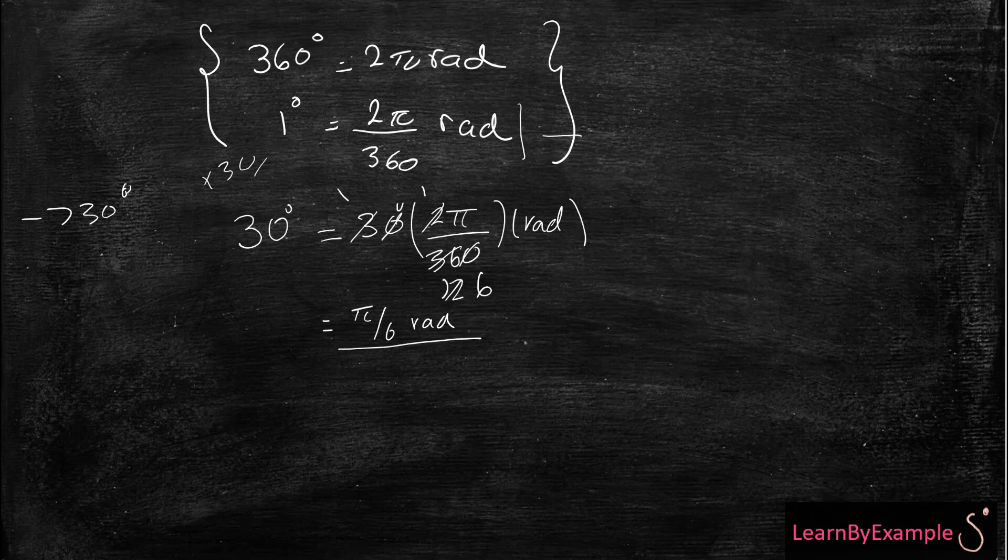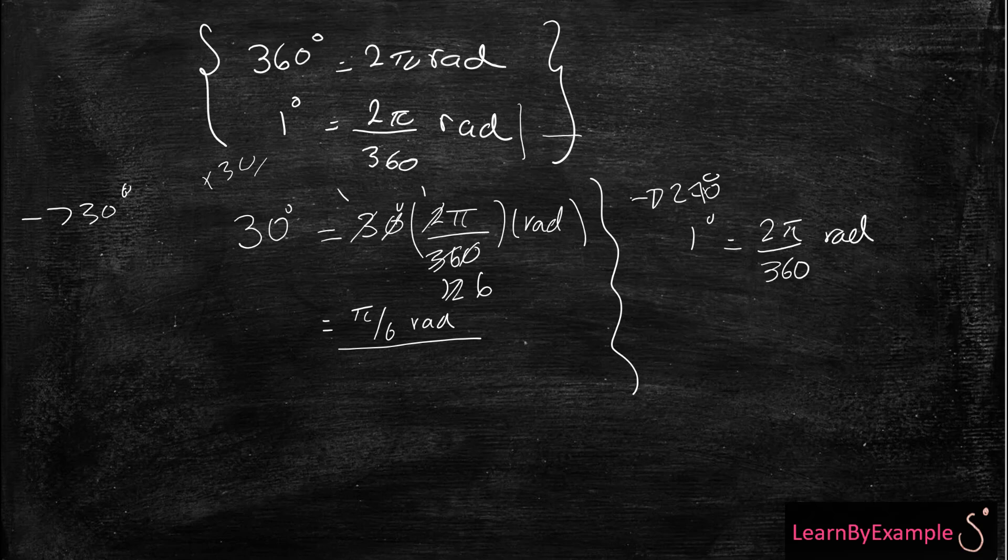Now let's do another example. So let's maybe just convert 270 degrees into radians. So same thing, if I have the equation of 1 degree is 2π over 360 radians, I'm going to multiply this side by 270, and the right hand side by 270. And I'm going to write the rest. And what's going to happen is that I'm going to divide this. The zeros are going to cancel.